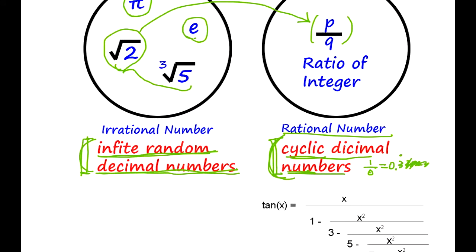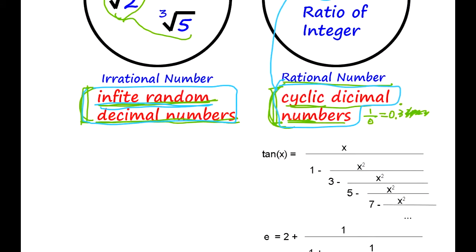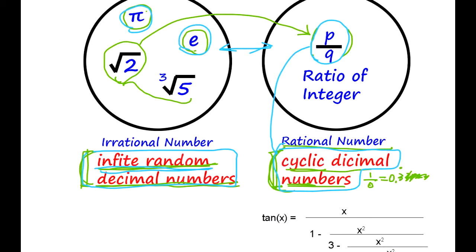P over N is one definition. This is the first definition you learn in high school. And this is now the second definition. They are necessarily sufficient conditions. So we say if it's not the ratio of integers, it's irrational. Now, the irrational necessary sufficient condition is infinite random decimal numbers. We use this definition to prove that pi and e are irrational.